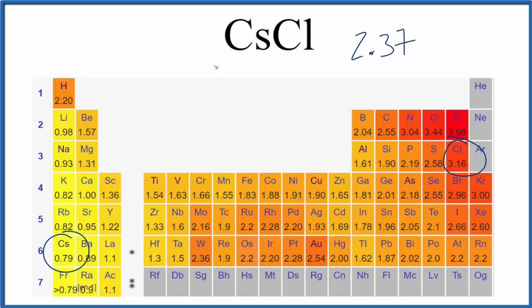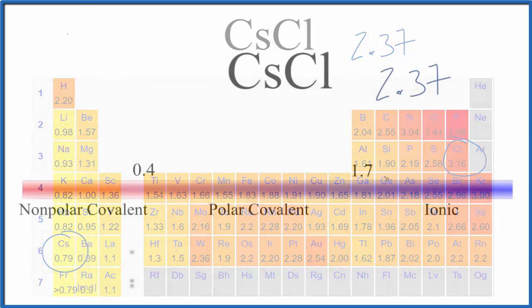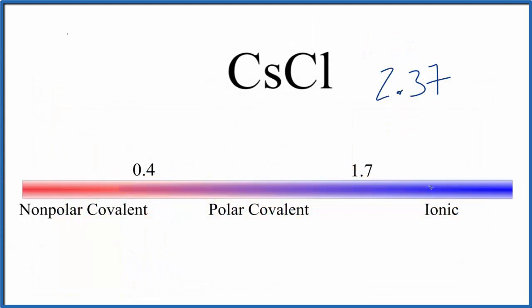Let's see what that means. So on our scale, 2.37 is about right here. So we would expect cesium chloride to be an ionic compound. We have a metal and a nonmetal, we have a fairly large difference in electronegativity.